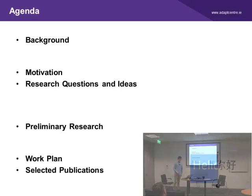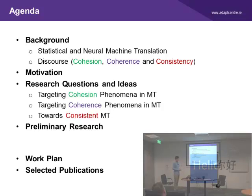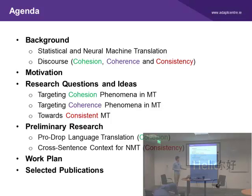Here is our agenda. Firstly, I will quickly go through the background on machine translation and discourse. Secondly, I will use examples to explain why we choose this topic. Thirdly, I will give three research questions, each related to one property of discourse. And finally, I will show you what we have done and what we will do in the future.